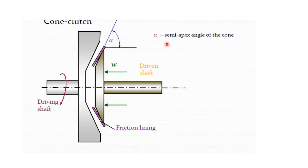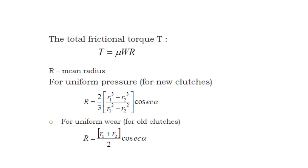The friction lining angle is equal to alpha. Alpha is equal to the semi-apex angle of the cone.